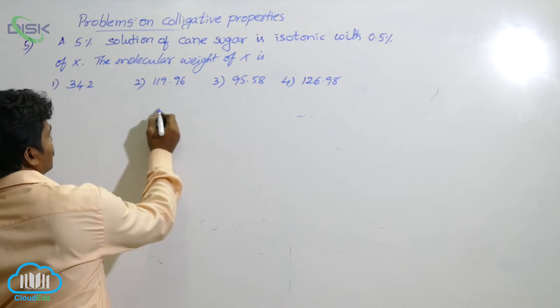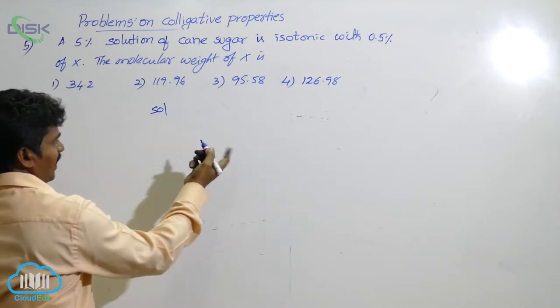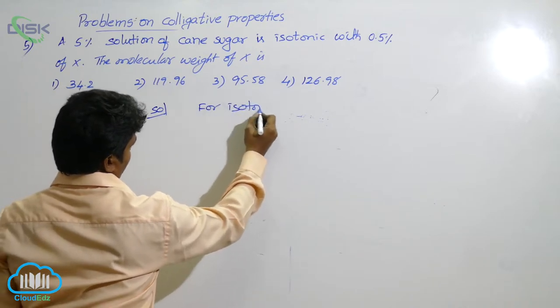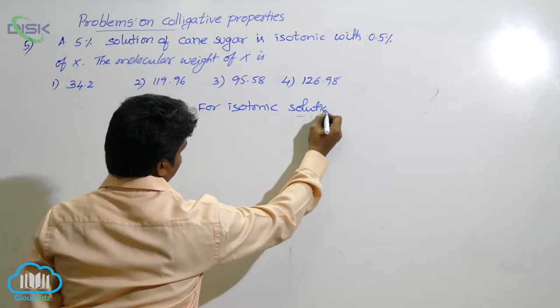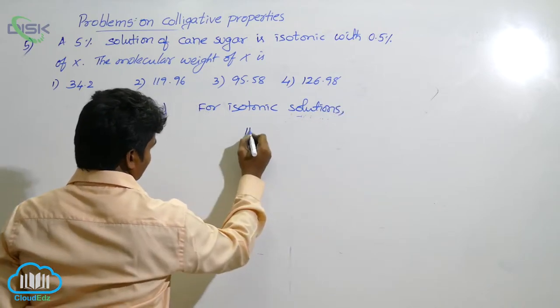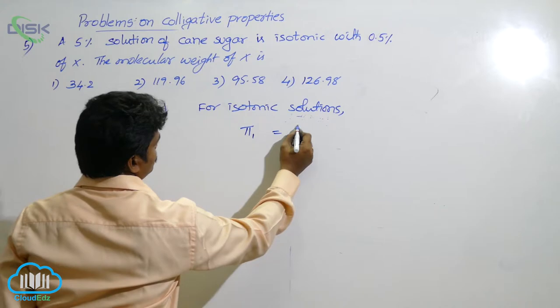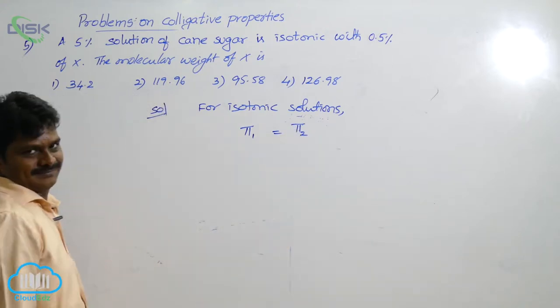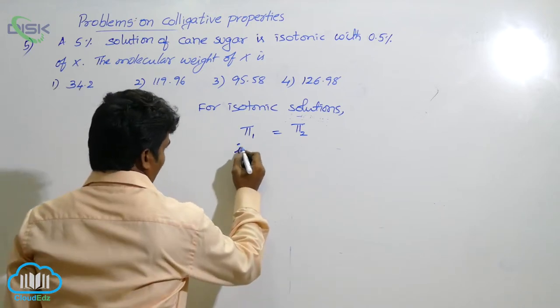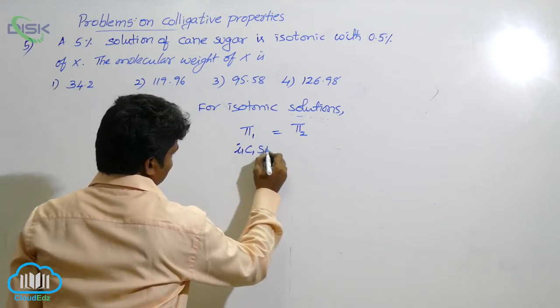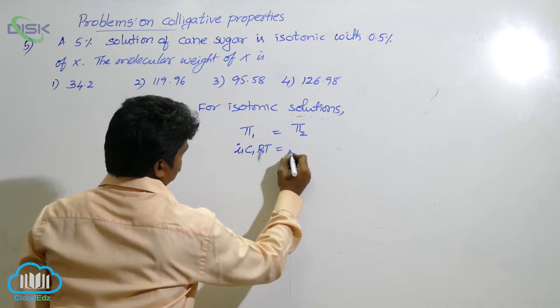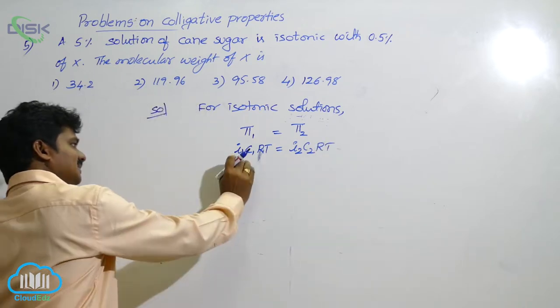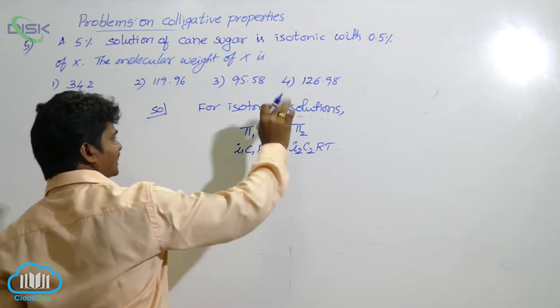For isotonic solutions, what is the formula? For isotonic solutions, osmotic pressure of first solution equals to osmotic pressure of second solution. Similarly, I1 C1 RT equals to I2 C2 RT. These are the terms of first solute. These are terms of second solute.